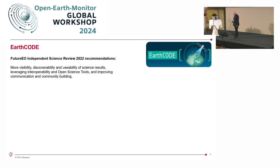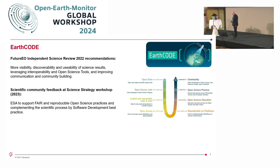Some background. The future EO Independent Science Review 2022 recommendations were made to have more visibility, discoverability, and usability of science results, leveraging interoperability and open science tools, and improving communication and community building. The scientific community feedback at the Science Strategy Workshop in 2023 stated that ESA were to support fair and reproducible open science practices, complementing the scientific processes by software development best practice.